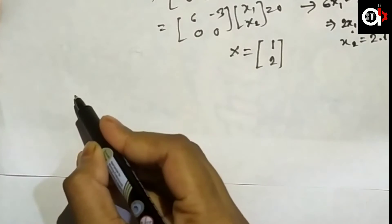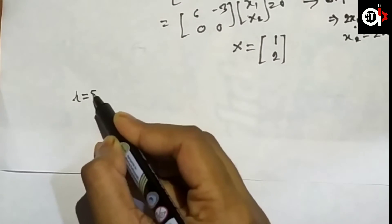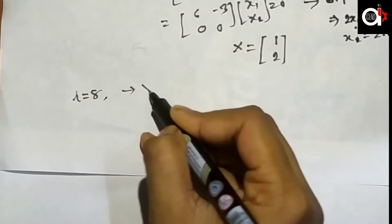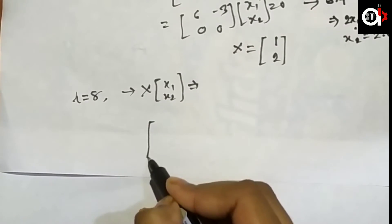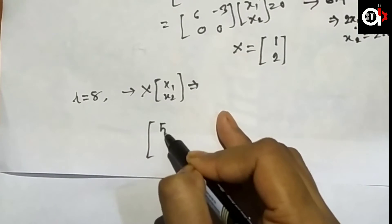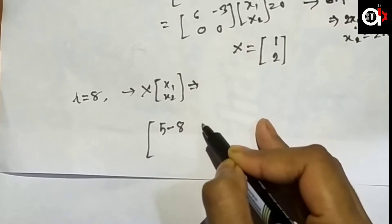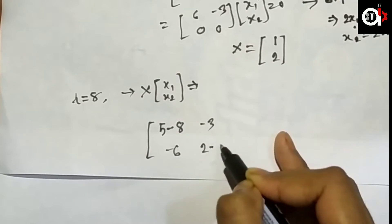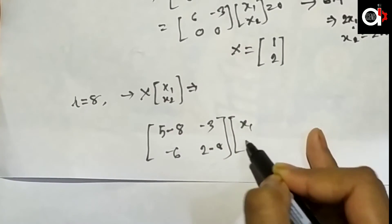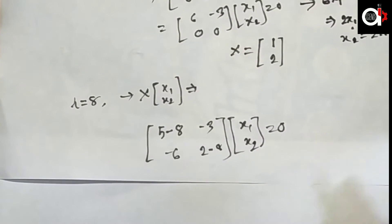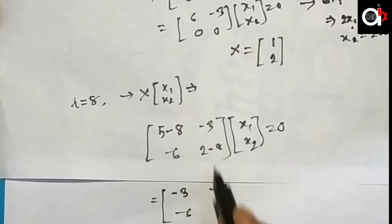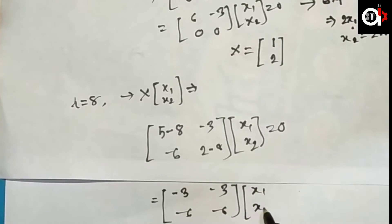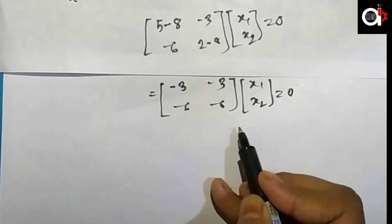Now for eigenvalue λ = 8, we substitute into (A − 8I)x = 0, giving the matrix [5−8, −3; −6, 2−8] = [−3, −3; −6, −6]. This gives the equation −3x₁ − 3x₂ = 0.